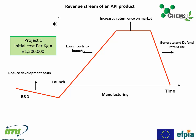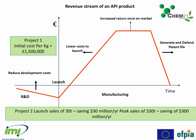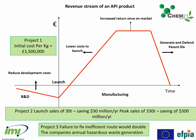Looking at some real project examples: Project one had an initial cost of material of around £1.5 million per kilo — thinking about new, more efficient, and cheaper routes could save a considerable amount of money in the development phase. Project two had sales volumes at launch of around 30 tonnes; designing a good route saved around $30 million in the first year, with even greater savings at peak sales. Project three had a very long multi-step route, and failure to fix that inefficient route would have doubled the company's annual hazardous waste generation.